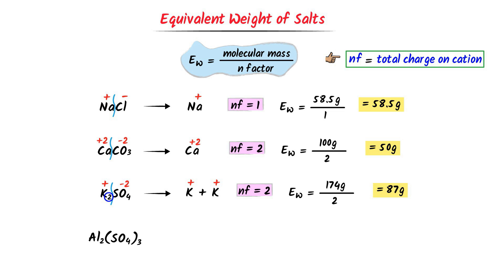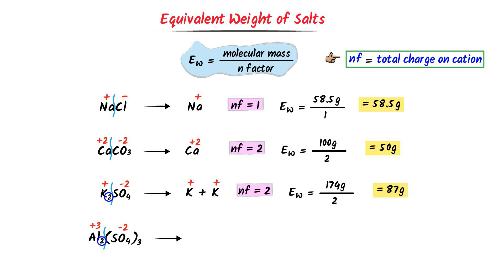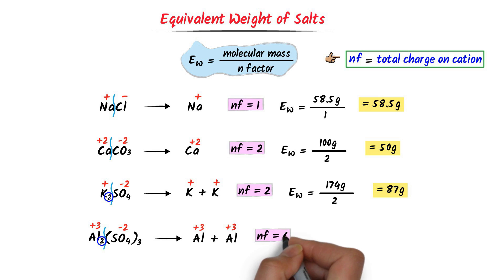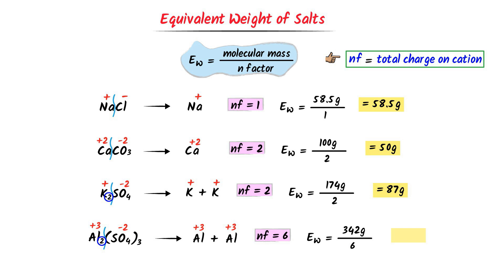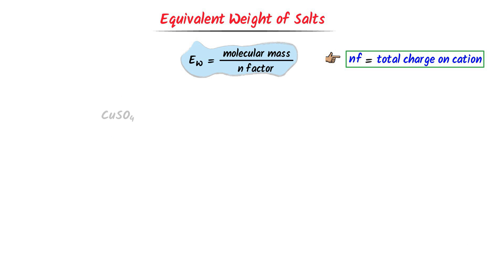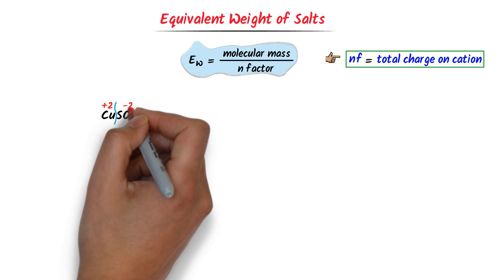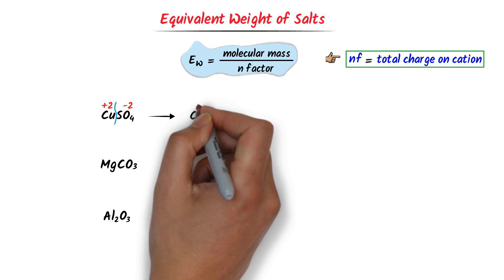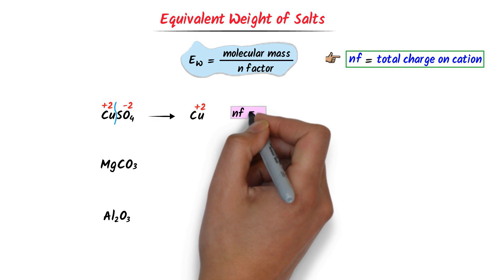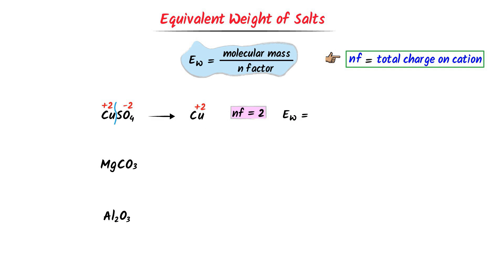In case of aluminum sulfate, I break it into two parts. The positive part is aluminum and there are two aluminum ions. The charge on each aluminum ion is 3, so two aluminum ions carry a positive 6 charge. The N factor of aluminum sulfate is 6. Its equivalent weight is equal to the molecular weight, which is 342 gram, upon 6. I get 57 gram.